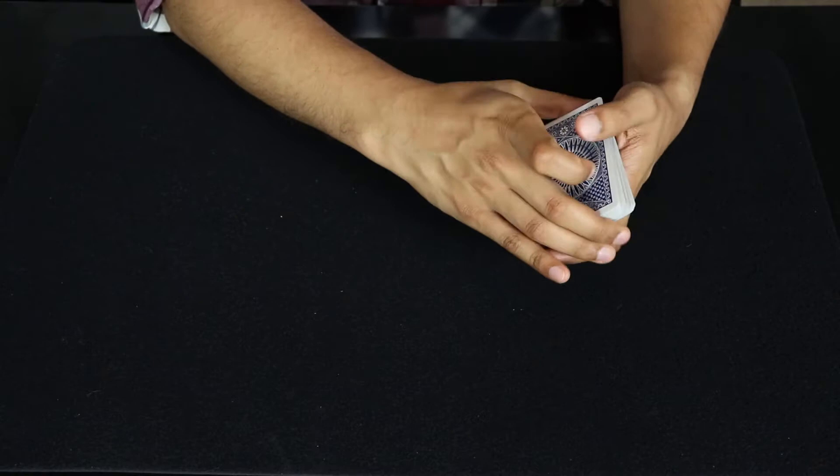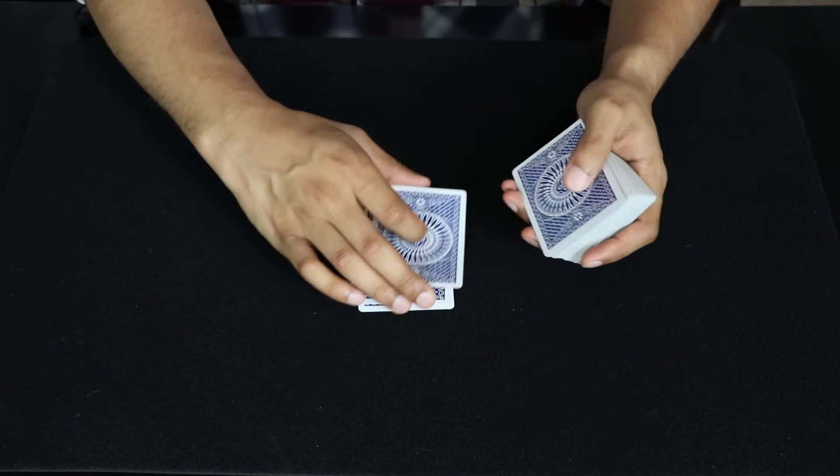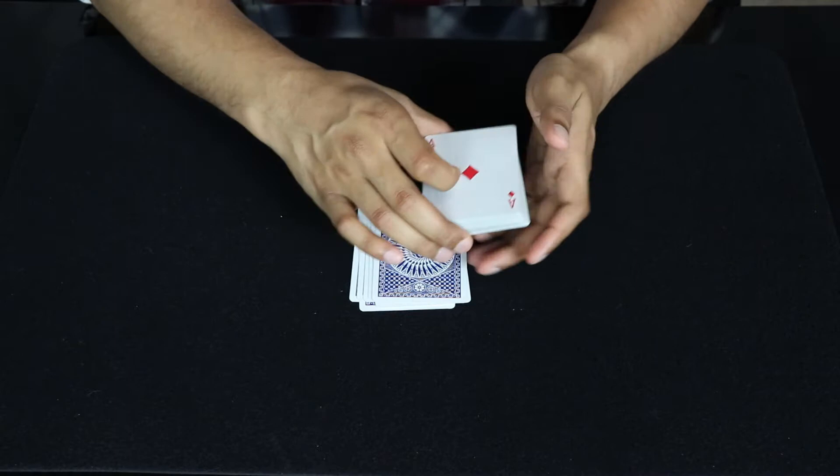So the 8th card, you go 1, 2, 3, 4, 5, 6, 7, and 8. And here we have the Ace of Diamonds.